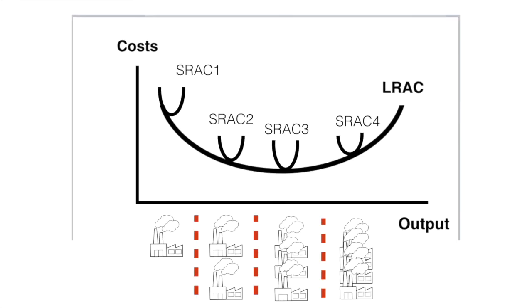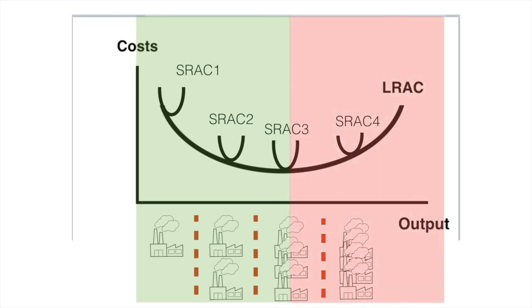Let's jump back to our previous video explaining the long-run average cost curve. Let's divide this curve into two sections. The green portion represents where average costs are falling as the firm expands and is benefiting from economies of scale. Beyond this point, the expansion of the firm results in rising average cost, which represents diseconomies of scale.